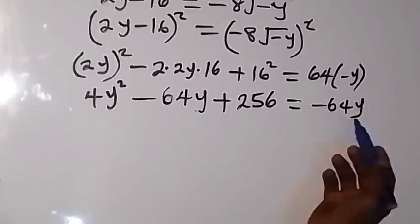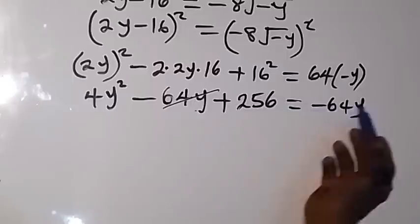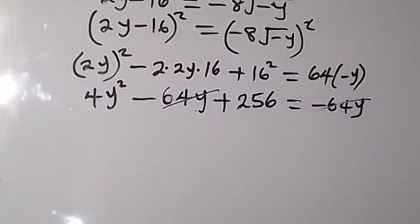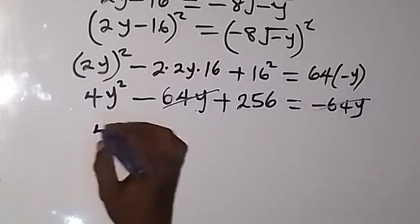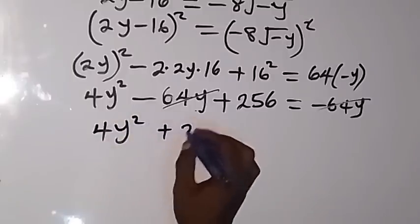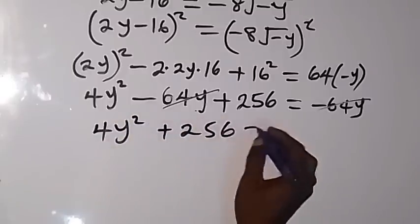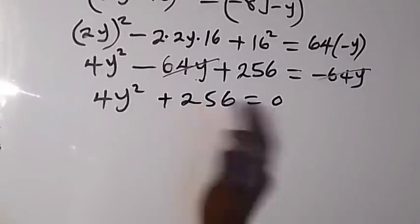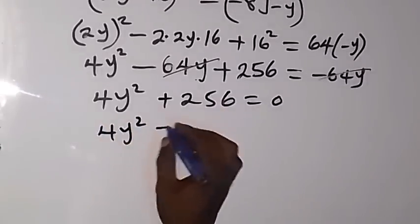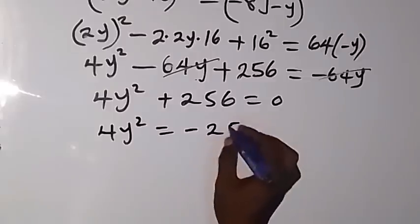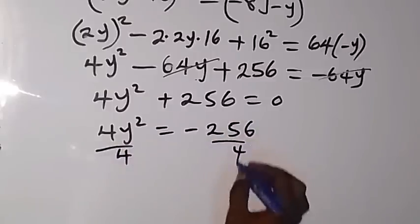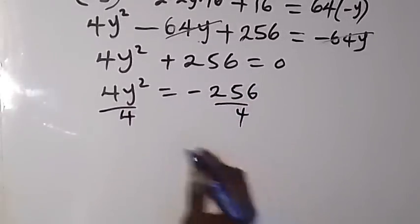We can see that the minus 64y terms cancel out, so we have 4y squared plus 256 equals to zero. Let's separate 256 to the other side: 4y squared equals to minus 256. Dividing both sides by 4, we have y squared equals to minus 64.